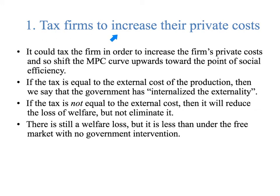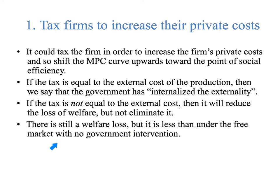Let's take a look at the first solution — taxing firms to increase their private costs. The government could tax the firm in order to increase the firm's private costs and therefore shift the marginal private cost curve upwards towards the point of social efficiency, point A. If the tax is equal to all of the external costs, then we would say the government has internalized the externality, forcing the paint company to pay for all of the extra costs. If the tax is not equal to the external costs, it will reduce the welfare loss but not totally eliminate it.